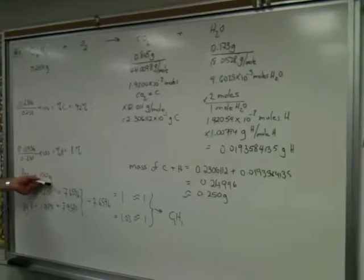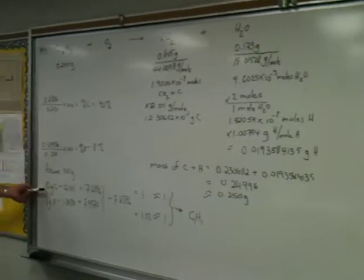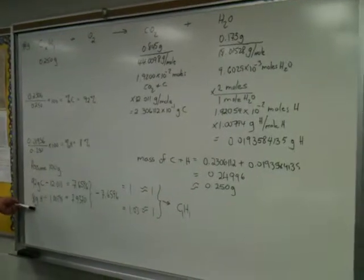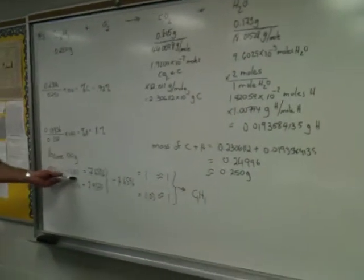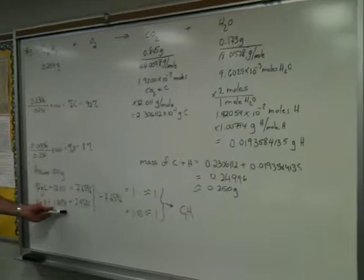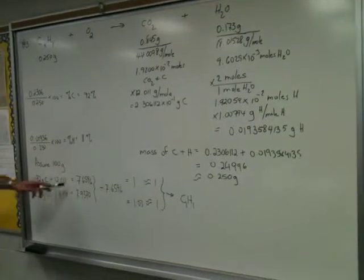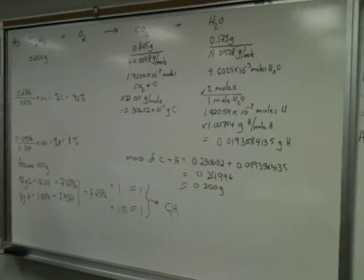Then I assume that there's a 100 gram sample, which means I'll have 92 grams of carbon, 8 grams of hydrogen. I divide by the molar mass of carbon, and I divide by the molar mass of hydrogen, respectively. And I get these two mole quantities.